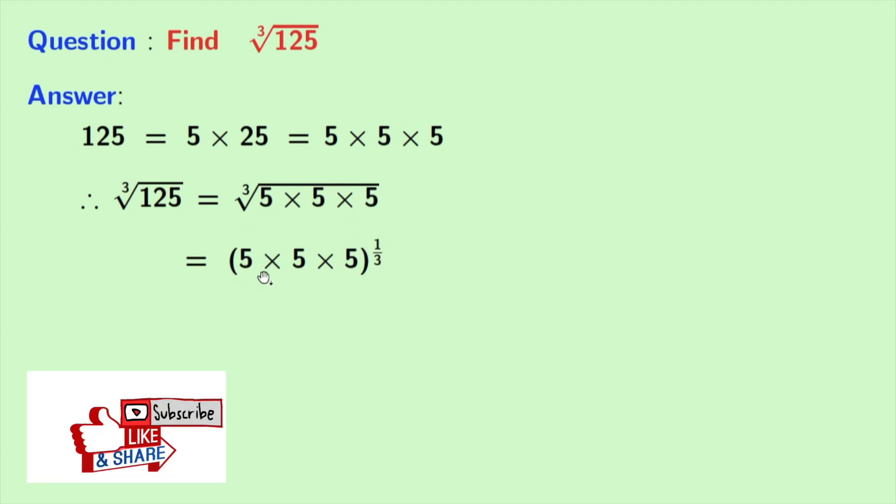So we have 5 times 5 times 5 power 1 by 3. Since we have 3 times of 5 here, we can write it as 5 cube. So we have 5 cube power 1 by 3.